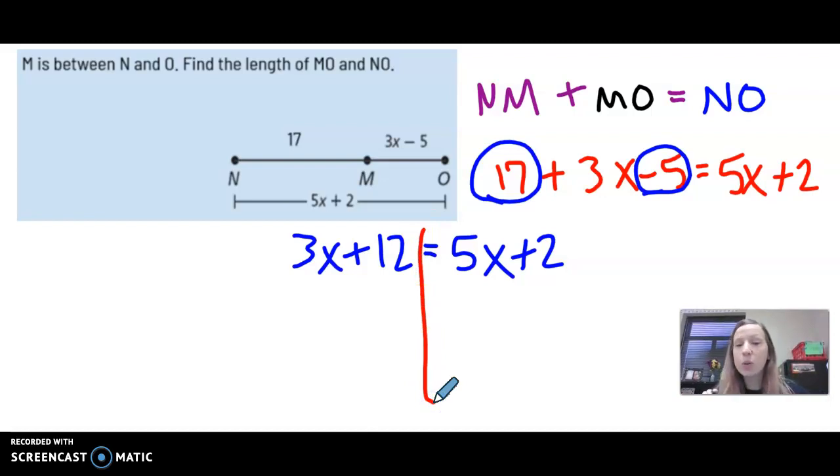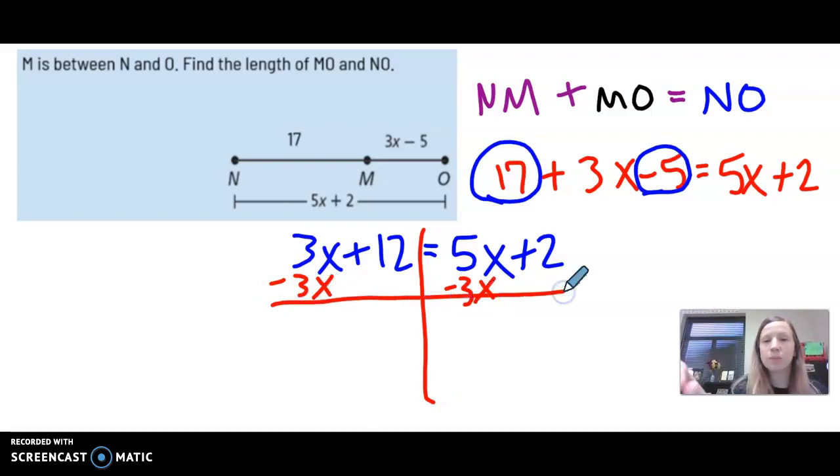From here, we have x's on both sides, so one of them needs to be subtracted. I'm going to subtract the 3x on both sides. So 3x minus 3x is zero, leaving you a 12 over here. 5x minus 3x is 2x. And don't forget to bring down the plus 2.